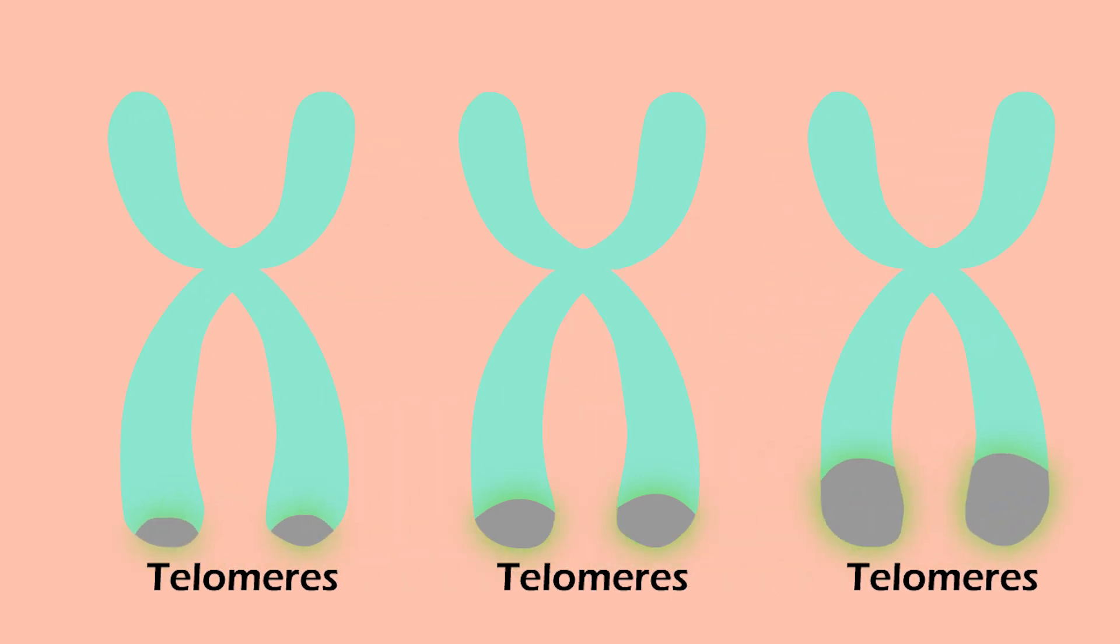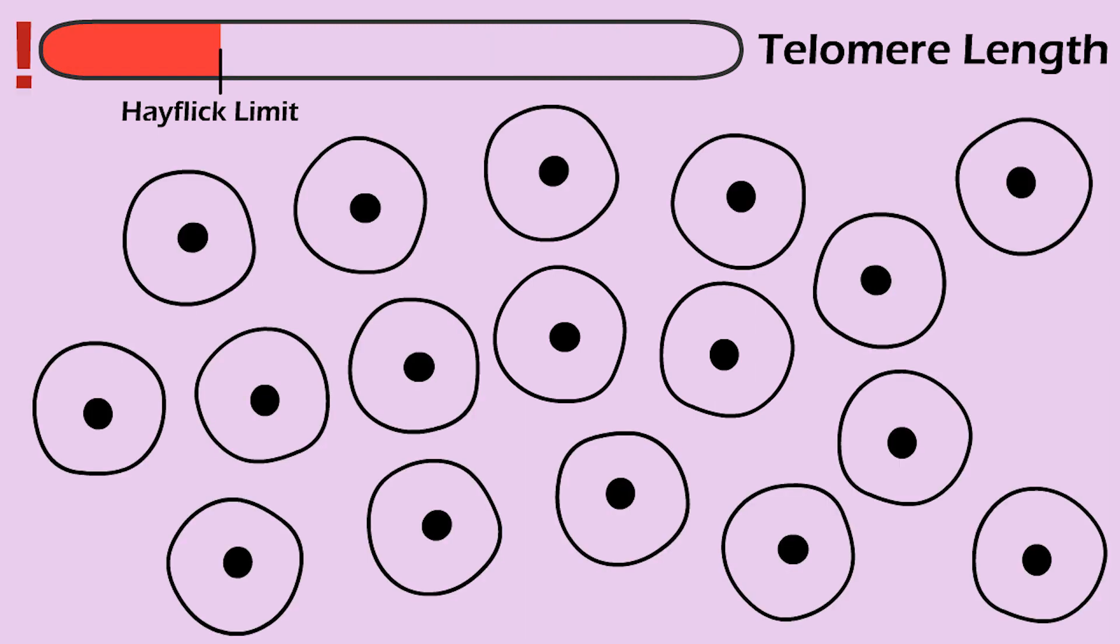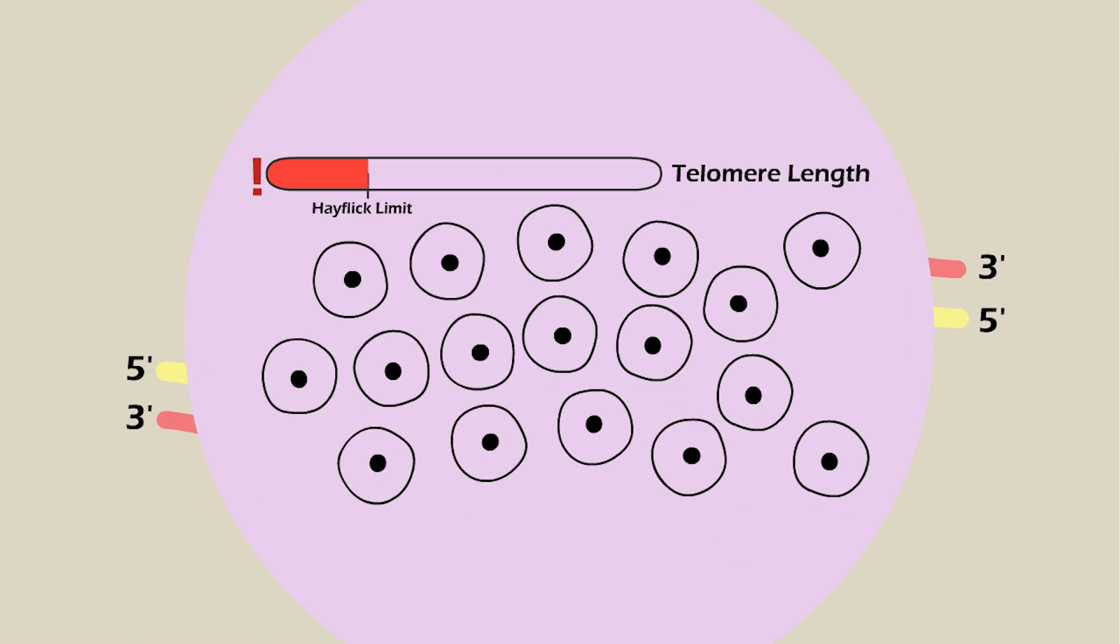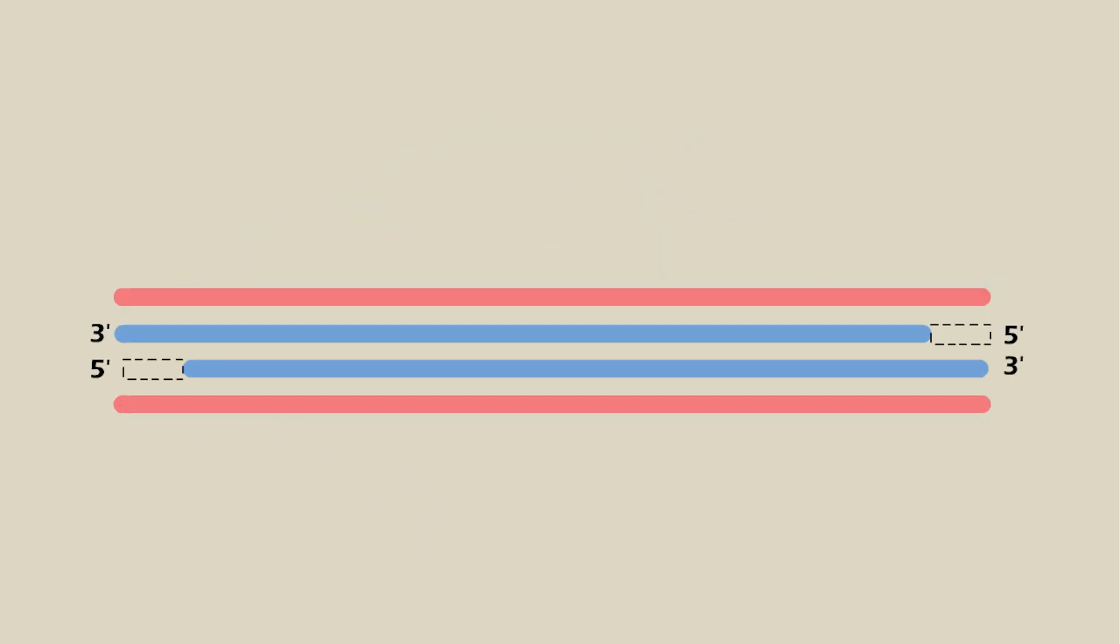However, why the length of telomeres differed between species or even cells of the same organism was still unknown. What was clear was that cells had a finite number of divisions, a restriction known as the Hayflick limit, and is due to the end-replication problem in DNA. First proposed by James D. Watson and Alexey Olovnikov, this was caused by the incapability of DNA polymerase to fully replicate the lagging strands during DNA replication, leading to progressive telomere shortening and eventually replicative senescence.